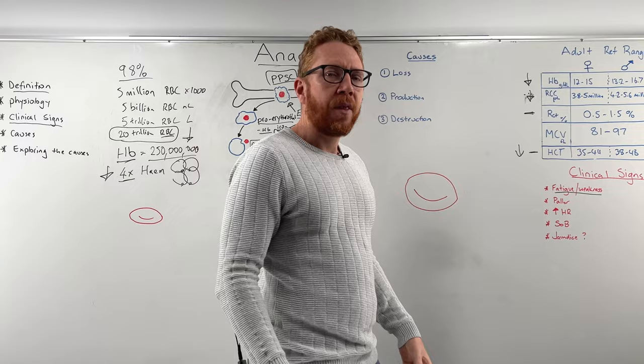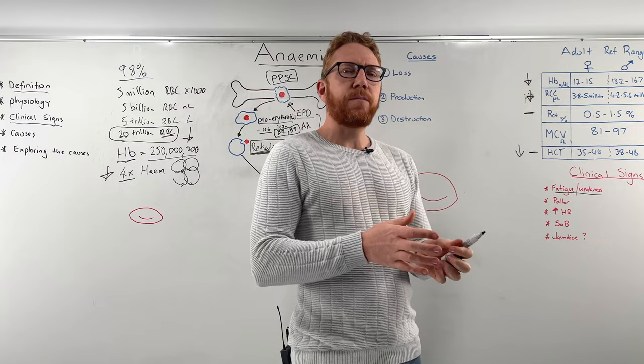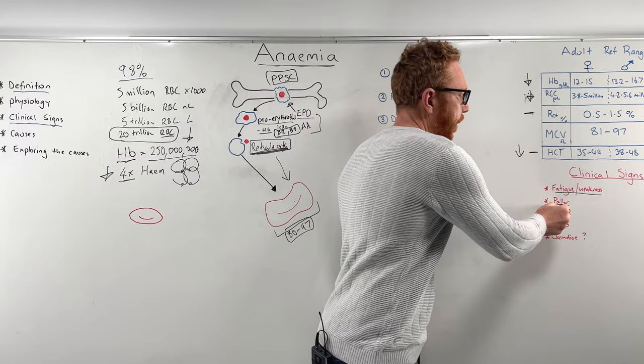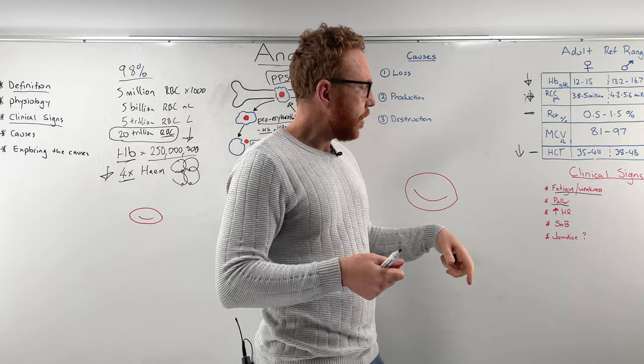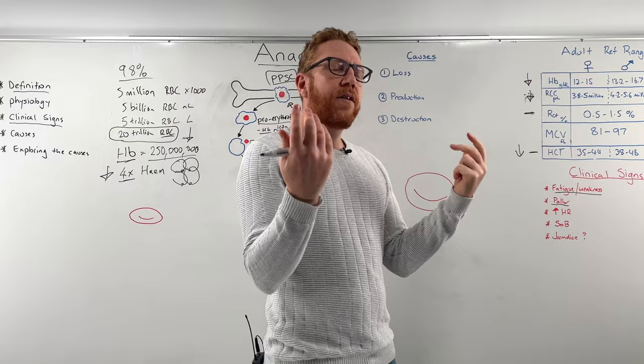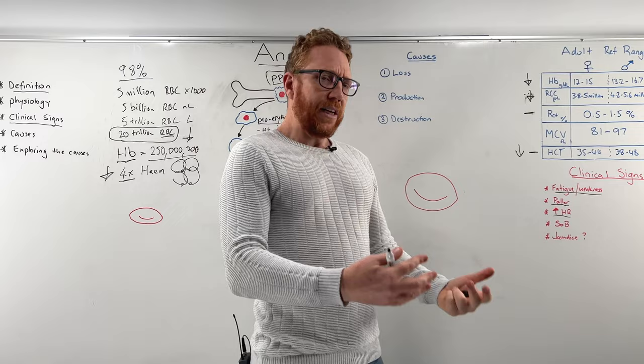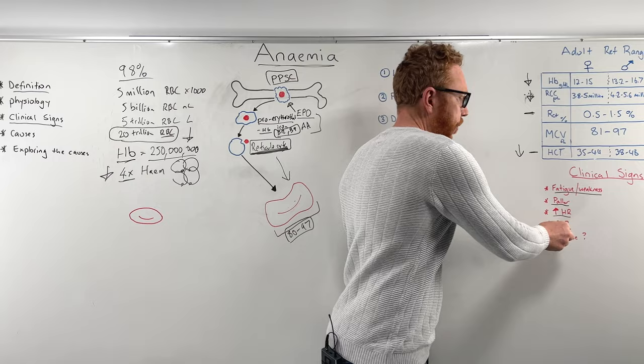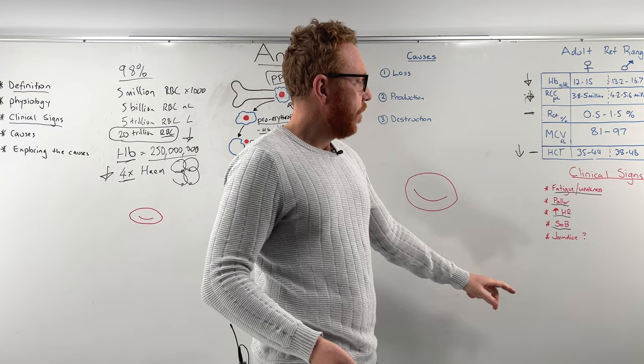The body would try to counter this by bringing blood to the central system, diverting it away from the periphery. So the patient would develop pallor — they would look pale, their hands would be cold because they are vasoconstricting. The body would also try to compensate by speeding up the heart rate to get more blood around the body. And particularly when exerting themselves, the patient would develop dyspnea or shortness of breath, which is very common.